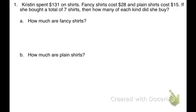So if you look at the first problem on your notes page, it is about Kristen. Kristen spent $131 on shirts. Fancy shirts cost her $28. Plain shirts cost her $15. If she bought a total of seven shirts, how many of each kind did she buy? With systems, we've been working with X and Y and two variables. So here, we've got fancy shirts and plain shirts, so we're going to have two variables.